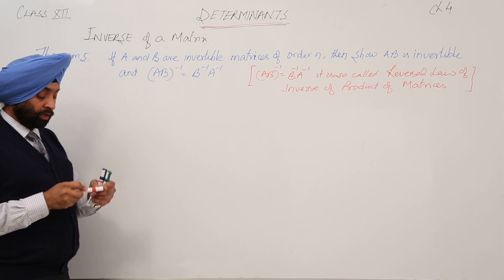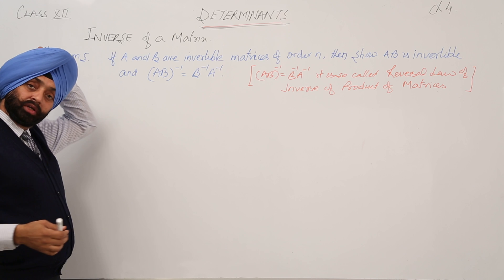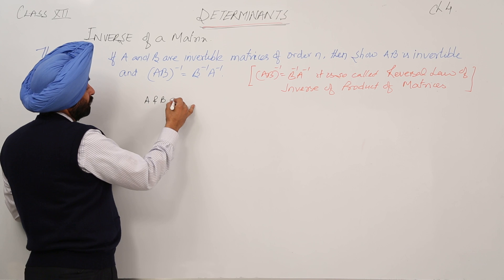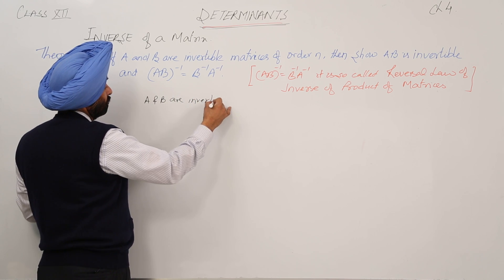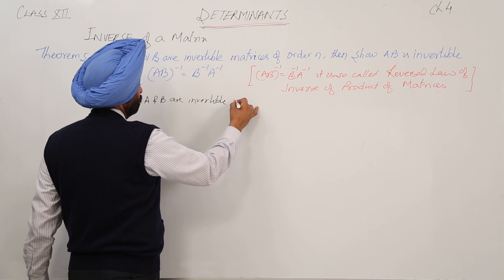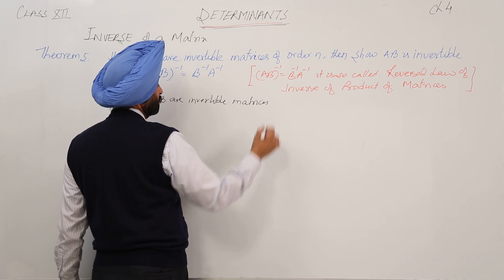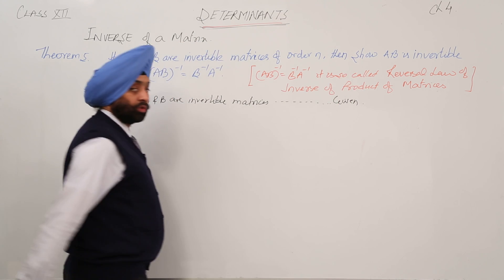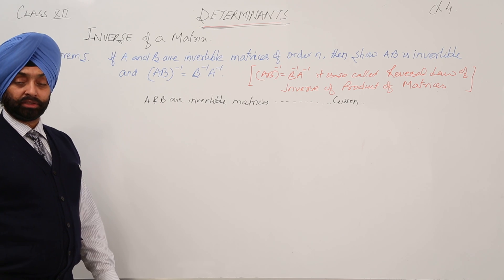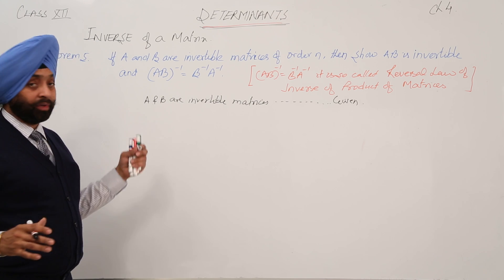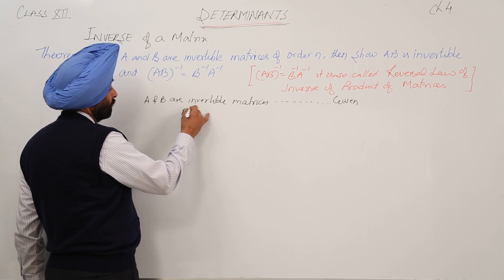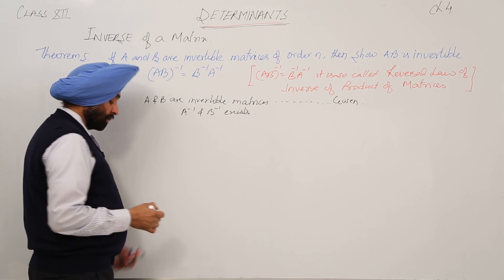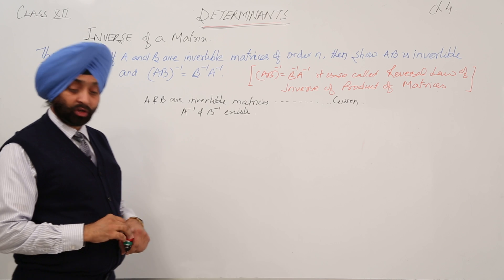Let's prove it. It is already given that A and B are invertible matrices. When A and B are invertible matrices, we can say A inverse and B inverse exist.